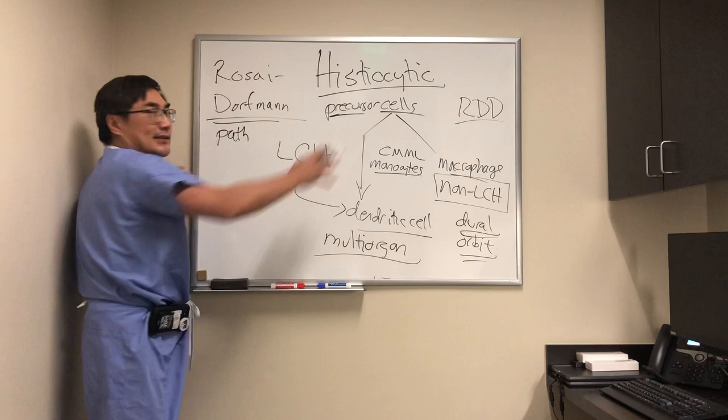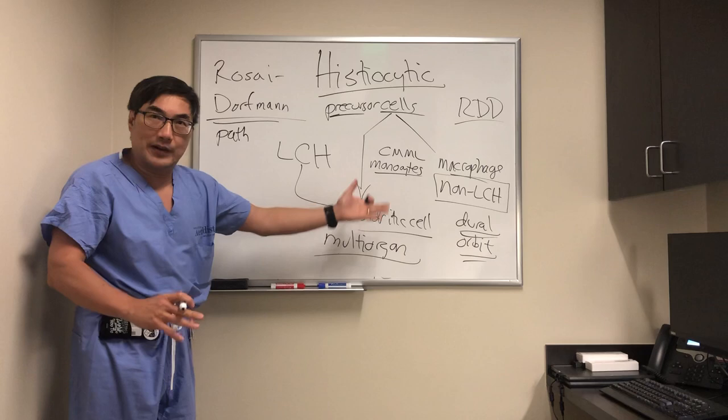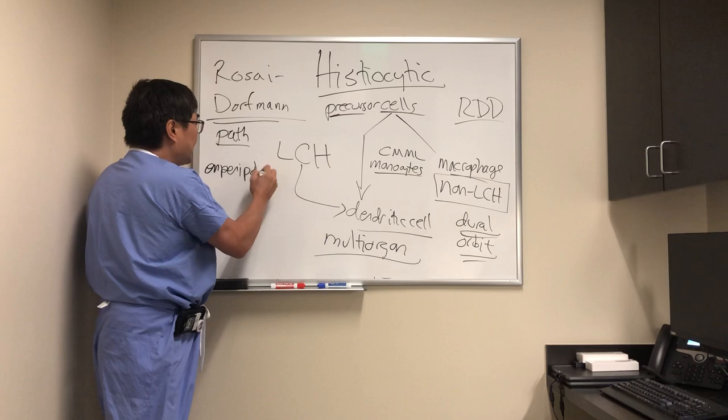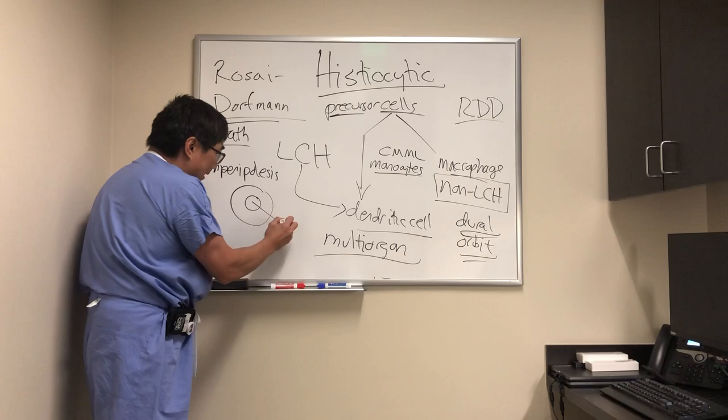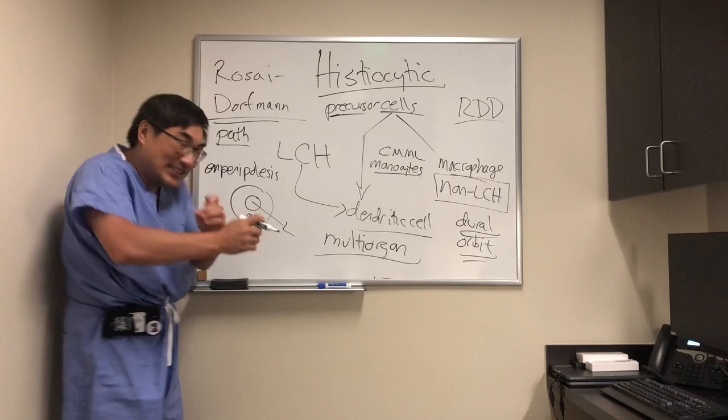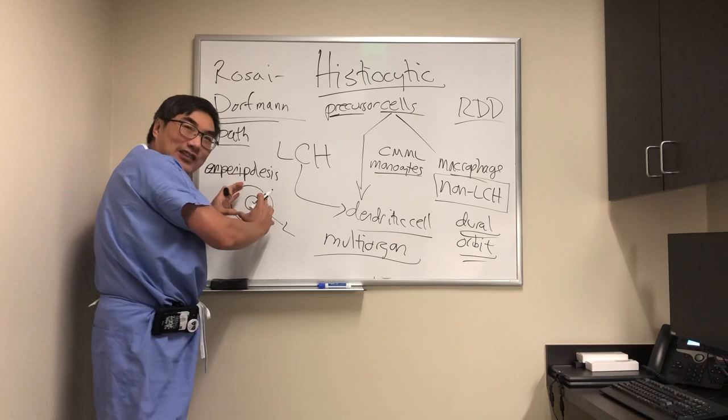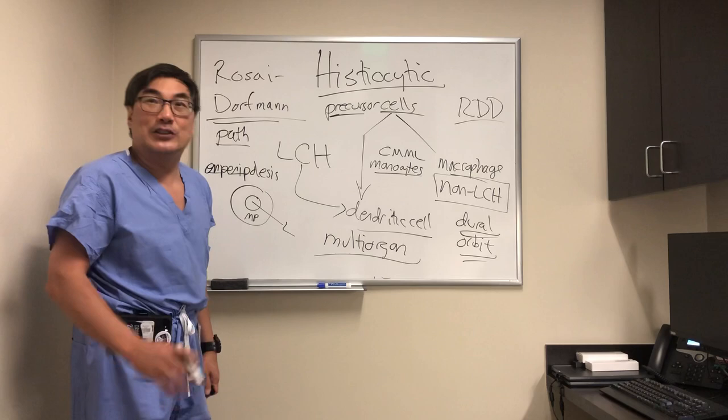In Rosai-Dorfman, the pathology is critical because you really can't identify it as a histiocyte from the MRI scan or from the orbital evaluation alone. The pathologic finding is called emperipolesis — an intracytoplasmic lymphocyte, meaning the macrophage has engulfed a lymphocyte, so inside the macrophage is another cell. 'Em' means in, 'peri' means around — the macrophage is eating what it's not supposed to be eating.